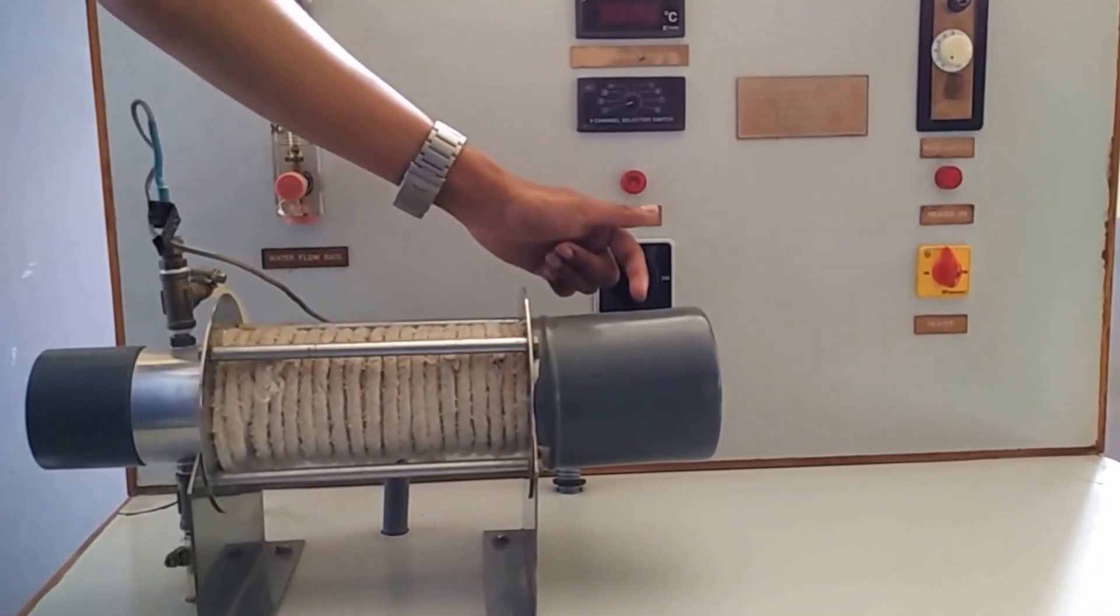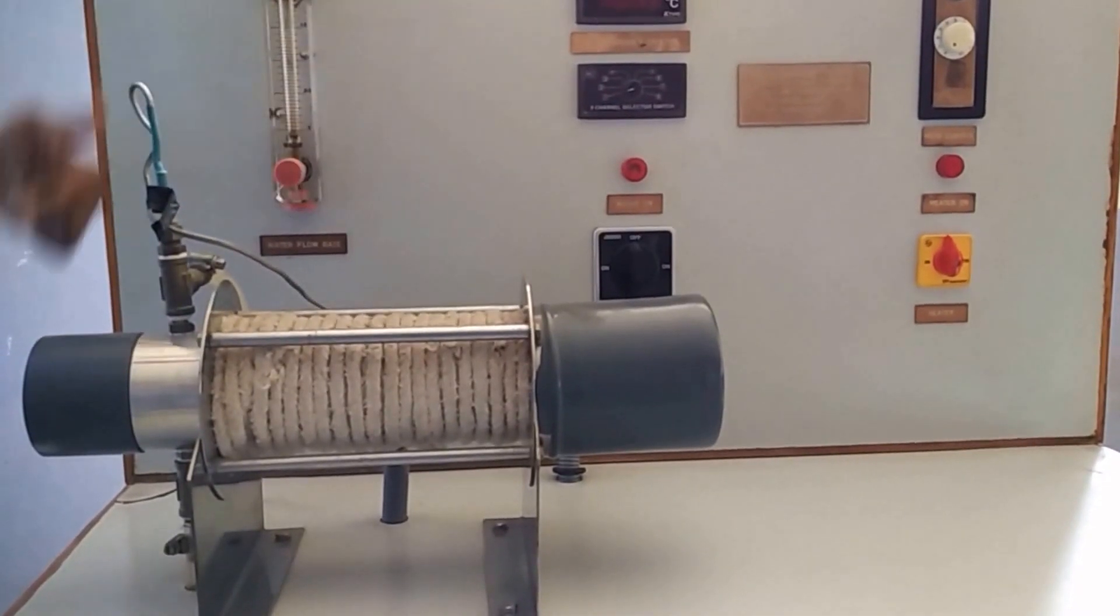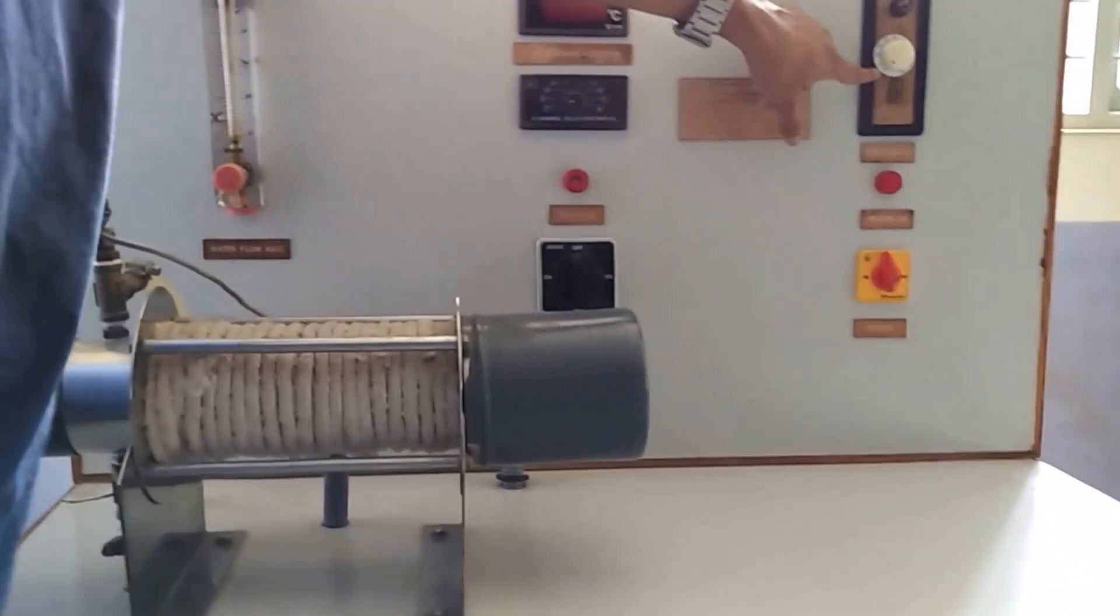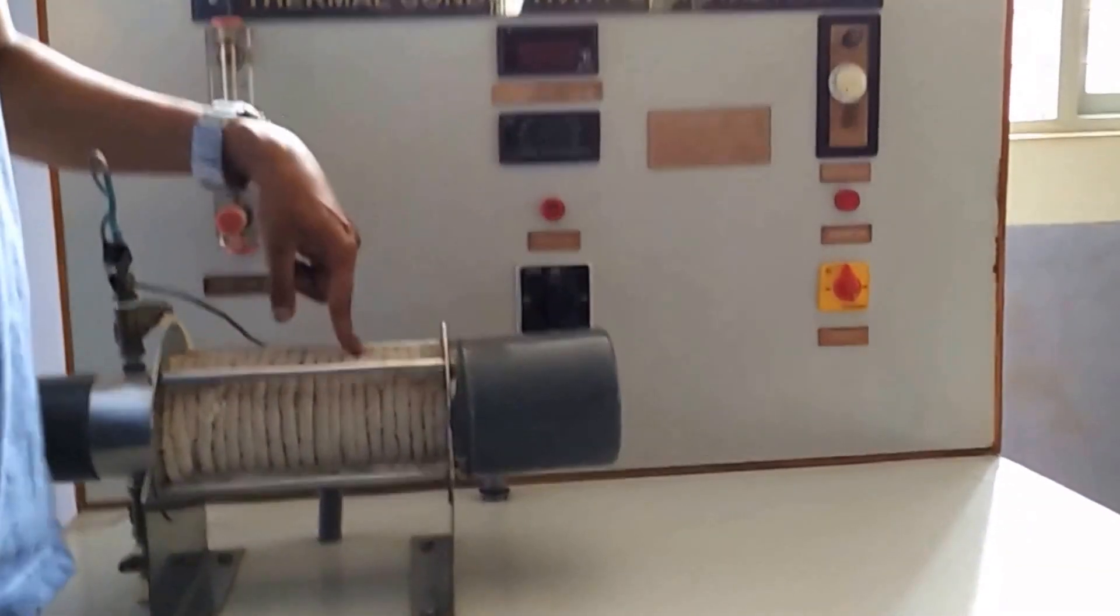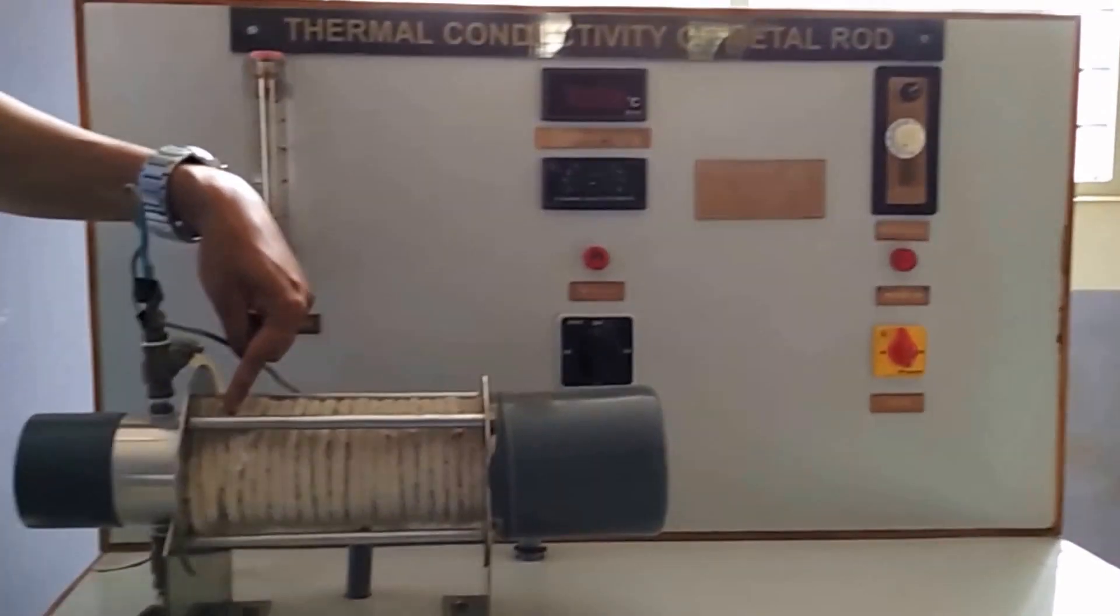When you start supplying heat, this end of the metal rod gets heated up and transfers heat from this end to that end. After steady state, we fix a known amount of heat for this metal rod so that the temperature will not vary with respect to time.